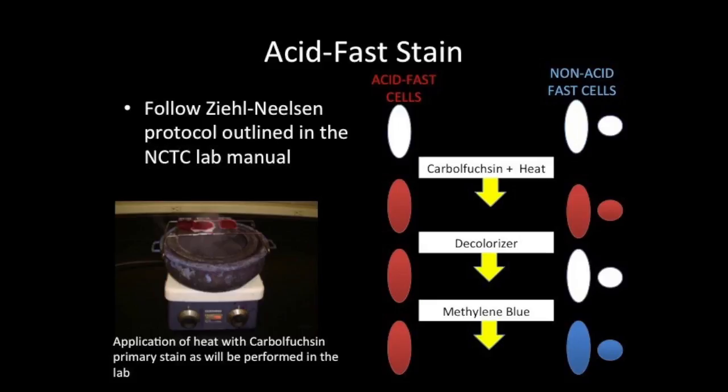As the slide is cooled, the wax traps the primary stain. The decolorizer used in the acid-fast stain is an acid alcohol, which is a mixture of hydrochloric acid and ethyl alcohol. As the decolorizer is applied to the cells, the primary stain is washed out of non-acid-fast cells, leaving them colorless. Cells containing mycolic acid hold fast, or tightly, to the primary stain even with exposure to the harsh decolorizer, and thus are termed acid-fast cells. Acid-fast cells now appear red at the end of the decolorizing step.